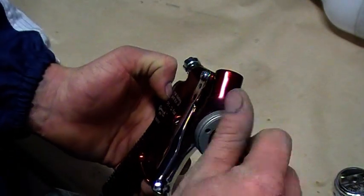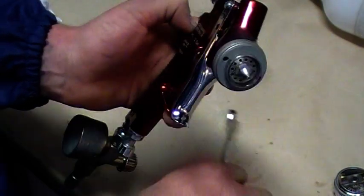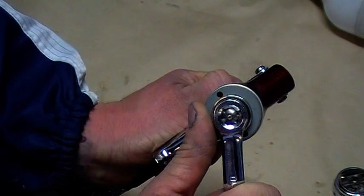Next up, we're going with the fluid tip. You don't want it overly tight, but it does have to be tight or else you won't have a seal with your air, so just nip it up.